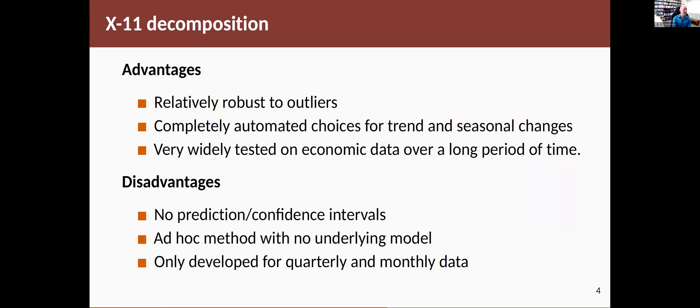There's some advantages to doing this type of decomposition. It's quite robust to outliers. There's lots of steps in the process that make it robust. So it begins with a classical decomposition that you've already seen but then it does various iterations of removing outliers, making things a bit smoother and so on. And it's completely automated so that you can just let it go and it'll come back with something useful. And because it's been used for so many decades it's extremely widely tested and is known to be a very reliable method.